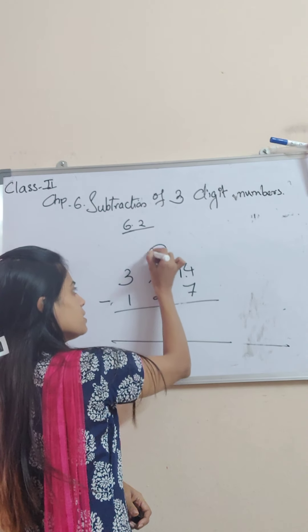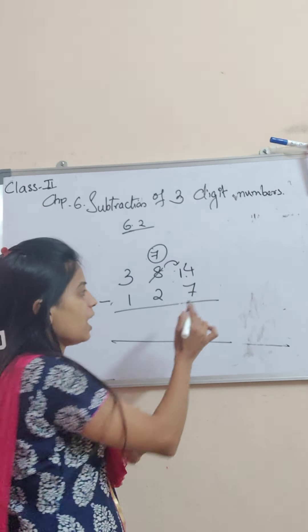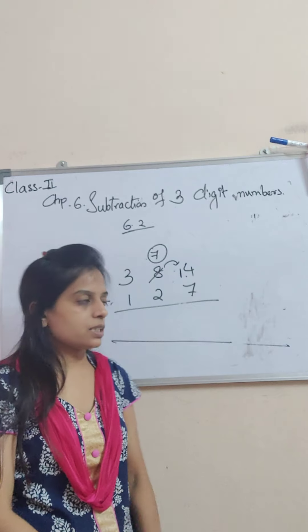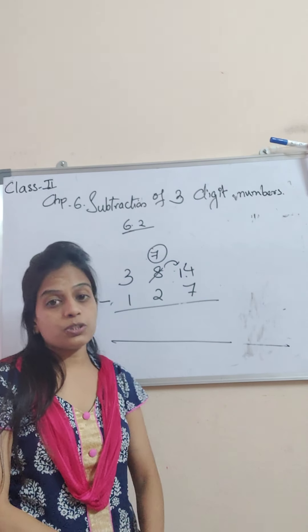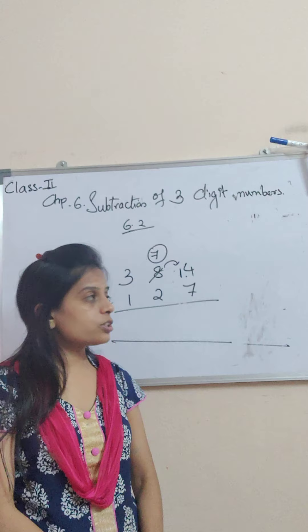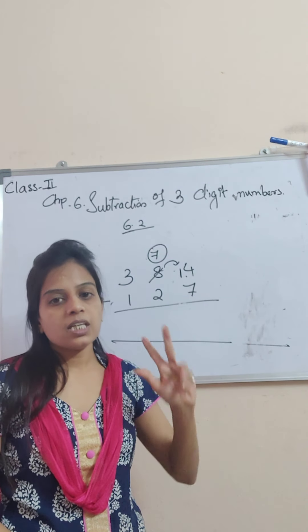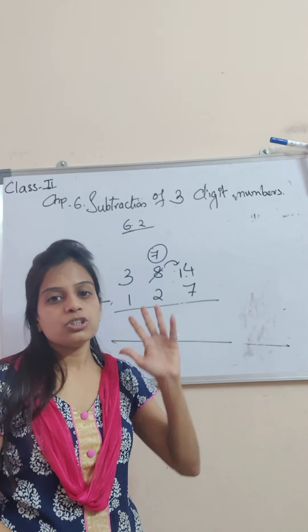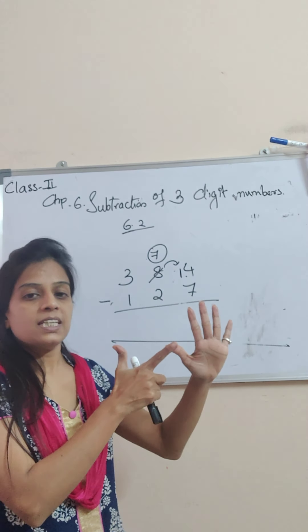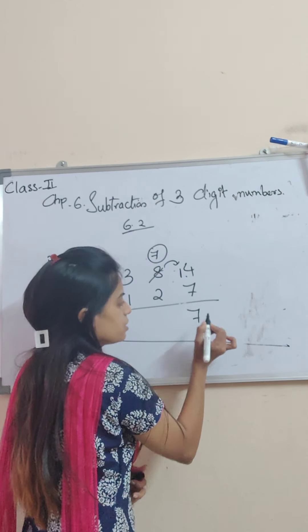Now, 8 cut ho jayega 7. After 7, count till 14: 8, 9, 10, 11, 12, 13, 14. How many fingers? It is 7. So you will write here 7.